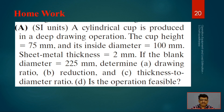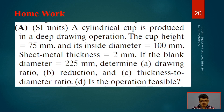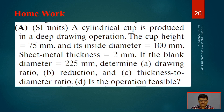For homework: a cylindrical cup is produced in a deep drawing operation with cup height 75 mm, inside diameter 100 mm, sheet metal thickness 2 mm, and blank diameter 225 mm. Find the drawing ratio, the reduction, and the thickness-to-diameter ratio, and determine whether the operation is feasible. Just like the previous problem, conclude on feasibility before proceeding further with the deep drawing operation.